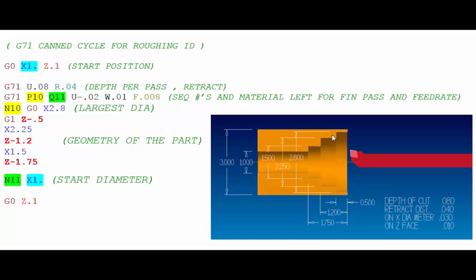Then the next diameter X 2 inches 250 and that goes to Z minus 1 inch 200 down to X 1 inch 5 over to Z minus 1 inch 750 and then the smallest diameter X 1 inch. So even though it starts from the smallest diameter to the larger diameter, the code is actually written from the large to the small.